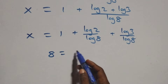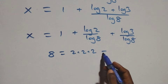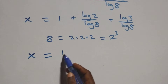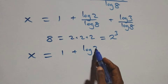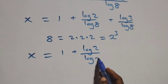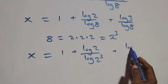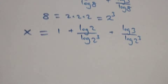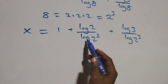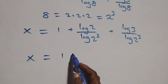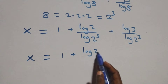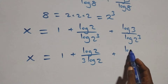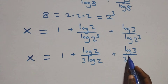From here, 8 can be written as 2 times 2 times 2, which is the same as 2 raised to the power 3. So here we have x equals to 1 plus log 2 over log 2 raised to the power 3, plus log 3 over log 2 raised to the power 3. Then we apply the logarithm power rule, where the 3 comes out front, and this becomes x equals to 1 plus log 2 over 3 log 2, plus log 3 over 3 log 2.